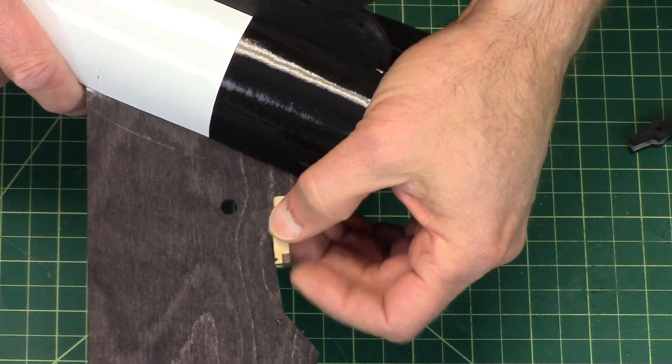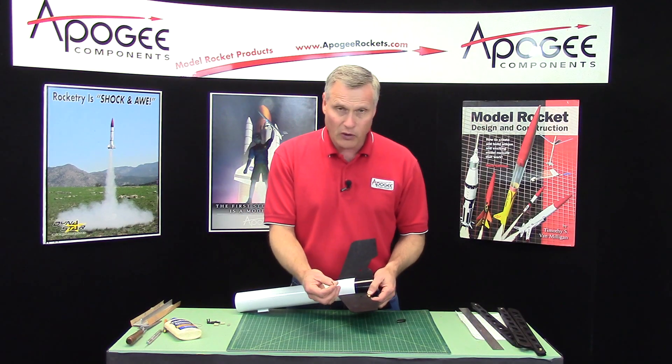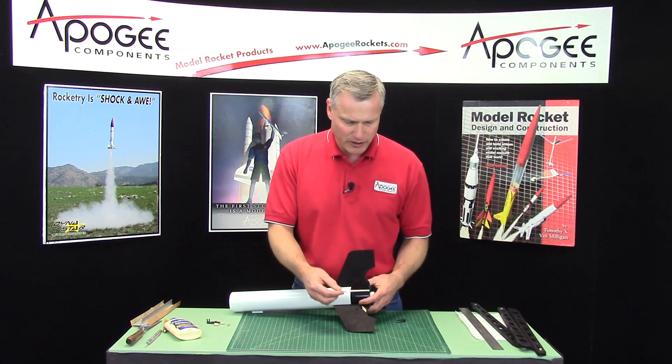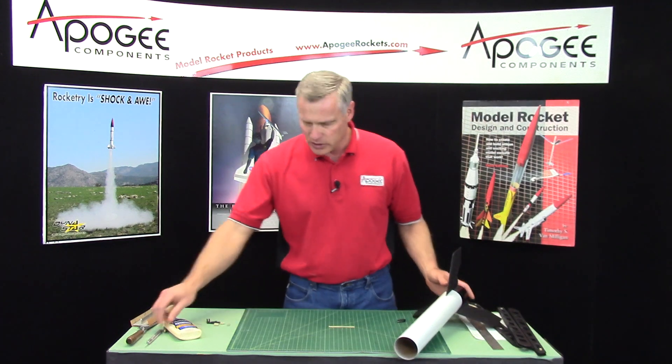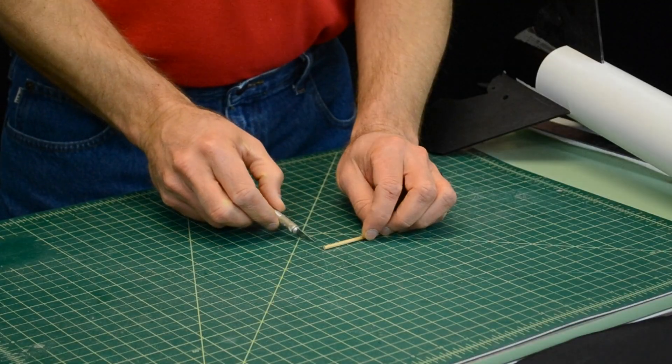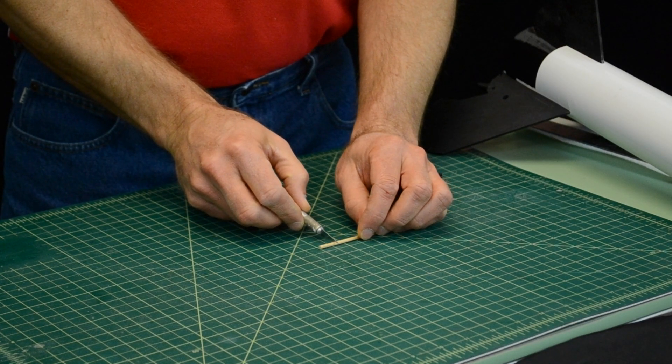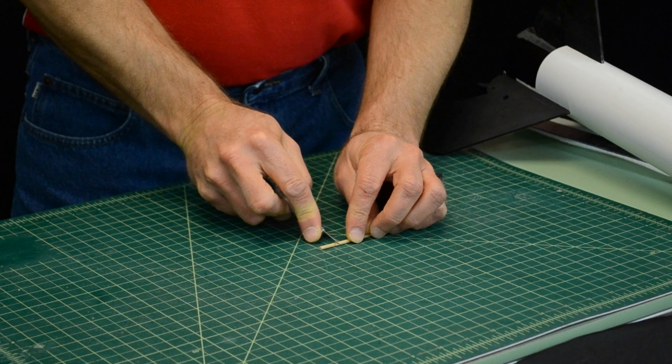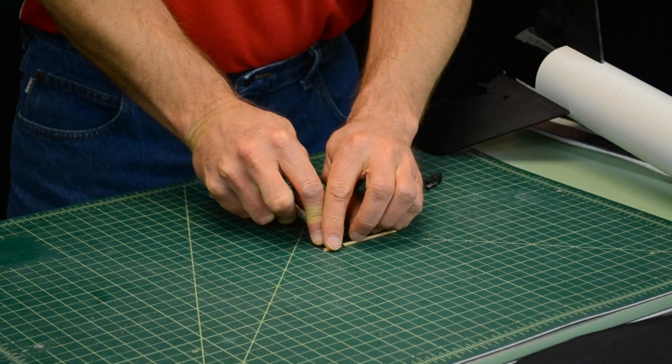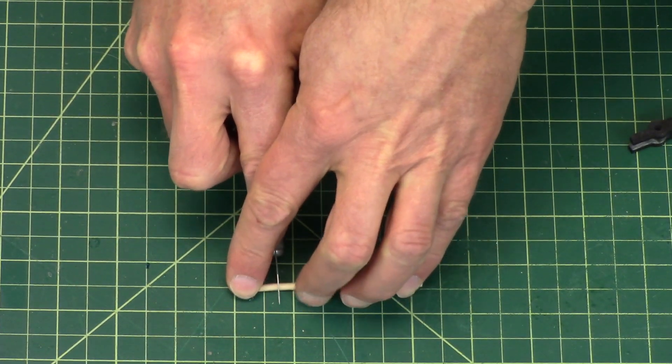We're going to need to use the other little dowel here. Like before, we're going to need a little piece that's about 5/8 inch long. This time I'm going to cut it with a hobby knife. My little squares here are a half inch, so just going to go a little bit further than that and just roll it back and forth until it snaps off.